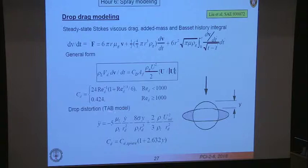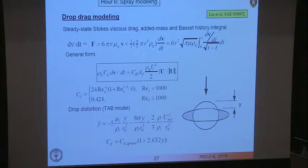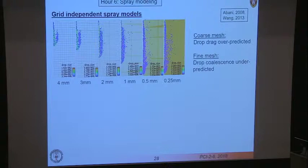The TAB model looks at the oscillation of a sphere subject to kinetic forces from relative motion, surface tension forces, and viscous forces. We solve this ordinary differential equation for each droplet parcel to find the distortion value y, then use that to calculate the drag coefficient.